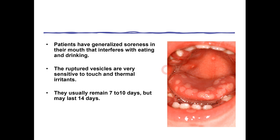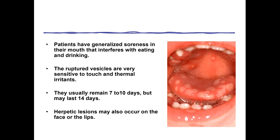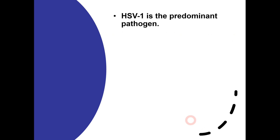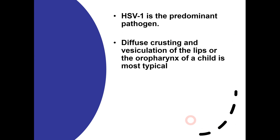At times, the herpetic lesion can also affect the lips as well as the face. HSV-1 is the virus causing acute herpetic gingivostomatitis, and these diffuse vesicles and ulcers are present on the lips and sometimes the oropharynx of the child. Most typically it affects the younger population, but it can also affect older individuals, though those cases are quite rare.